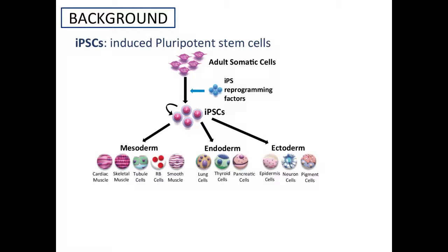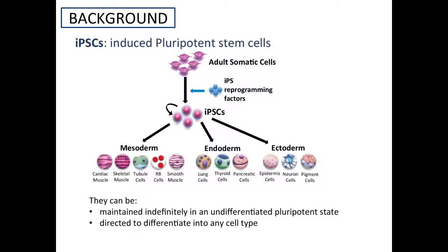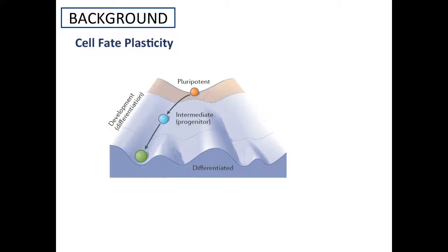First I have to introduce the concept of induced pluripotent stem cells. They are cells derived from somatic cells that are equivalent to embryonic stem cells because they have two properties: they can be maintained indefinitely in culture in an undifferentiated pluripotent state, and they can be directed to differentiate into any cell type of the human body. The development of iPSC cells was possible thanks to many works that helped to understand the concept of cell fate plasticity.